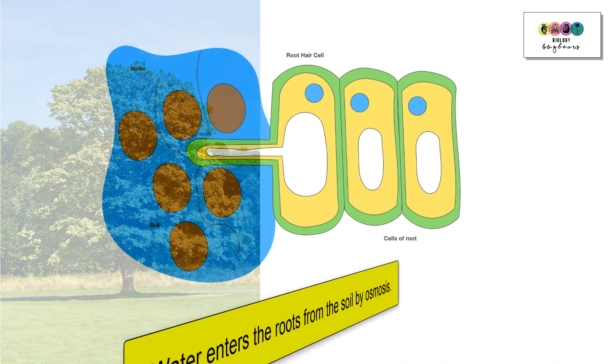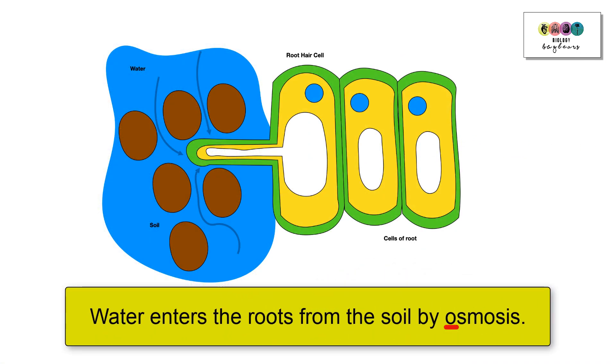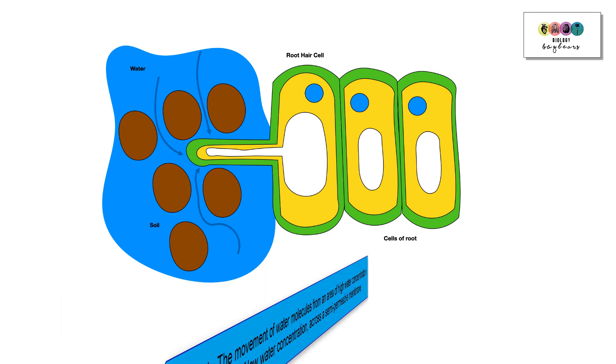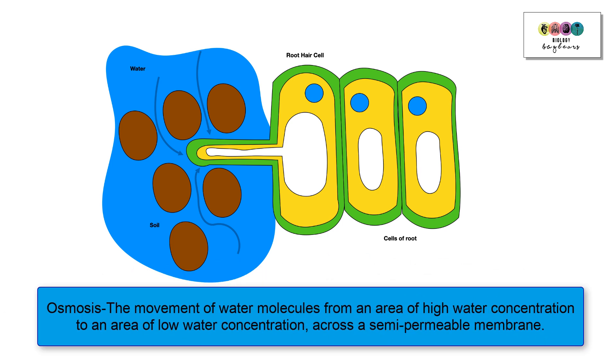Water enters the roots from the soil by the process of osmosis, which is a very important topic. Osmosis is defined as the movement of water molecules from an area of high water concentration to an area of low water concentration, and that movement is across a semi-permeable membrane.